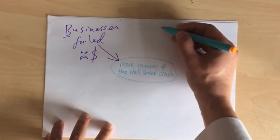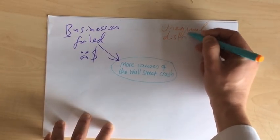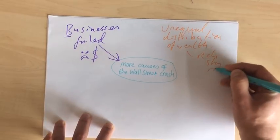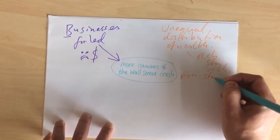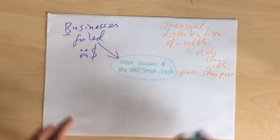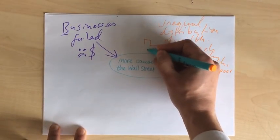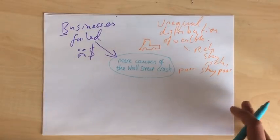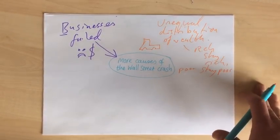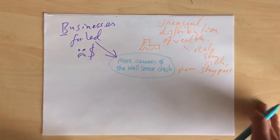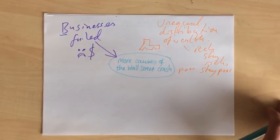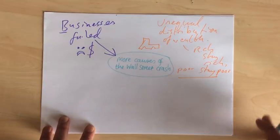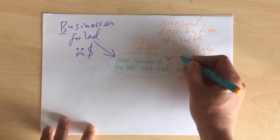The next one is Unequal Distribution of Wealth. A simpler way to put that is essentially the rich stay rich and the poor stay very poor. The problem is Henry Ford makes all his cars, churns them out, the rich people all buy one — but they don't buy another one the next year. Once they've sold a car or a fridge or a toaster or a radio to all the people who can afford it, they realise nobody else in America can afford to buy one because the poor people have stayed very poor. So these factories are no longer selling, which causes profits, wages, and jobs to go down, and in the end share prices to go down.